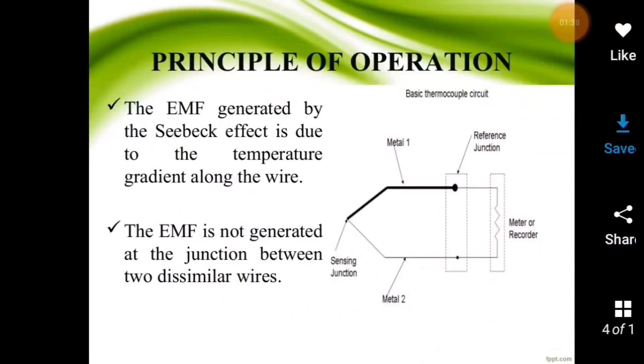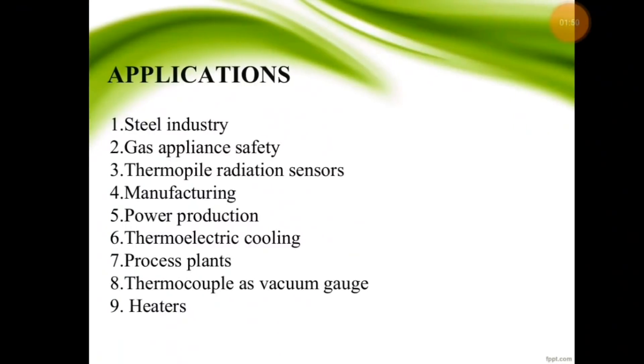Principle of operation: the EMF generated by the Seebeck effect is due to the temperature gradient along the wire. The EMF is not generated at the junction between two dissimilar wires. Applications include steel industry, gas appliance safety, thermopile radiation sensors, manufacturing, power protection, thermoelectric cooling, process plants, thermocouple as vacuum gauge, and heaters.